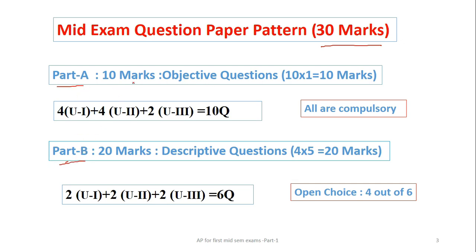In that part A we have 10 marks for objectives, each objective will carry one mark. The objective questions may be multiple choice questions, fill in the blanks, match the following. Out of 10 questions based on our syllabus, which is for 50% of the total syllabus for the first mid, we have 4 questions from unit 1, 4 from unit 2, and 2 from half of the third unit. This is for objective questions and there is no choice in it.